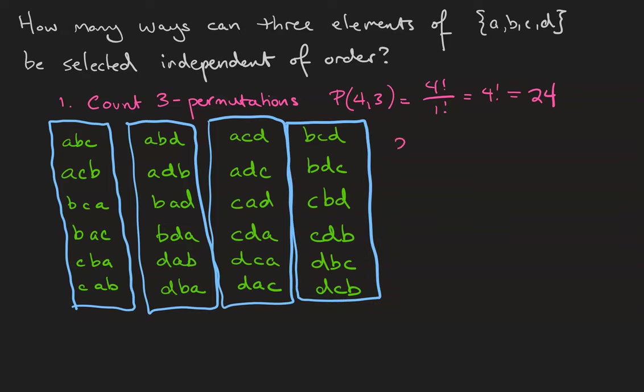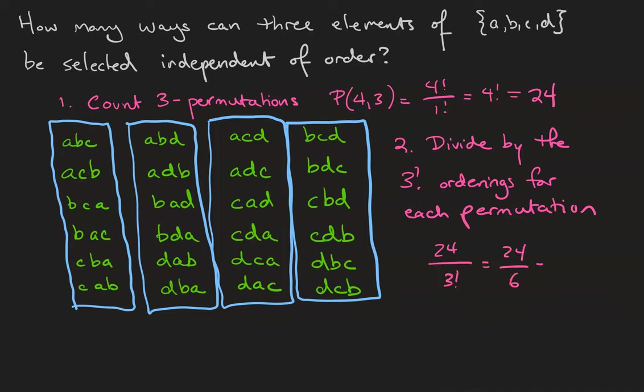So the next step is to divide by the three factorial orderings for each permutation. So 24 divided by 3 factorial. 3 factorial is 6. 24 divided by 6 is 4. And we can count 1, 2, 3, 4 unordered samples without replacement.